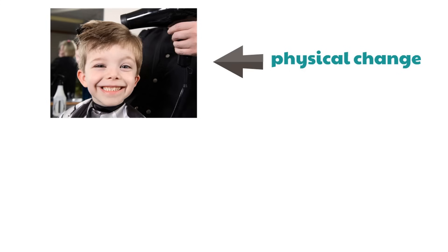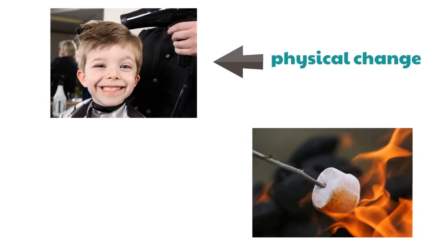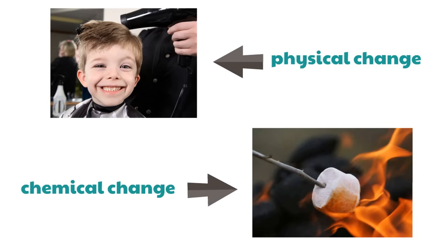What about this — a marshmallow roasting over a fire? If you add a cracker and chocolate, you've got s'mores. But is the change happening as this marshmallow is beginning to melt and roast a physical or chemical change? It's a chemical change — the type of matter itself is changing. It's darkening and turning into something different.